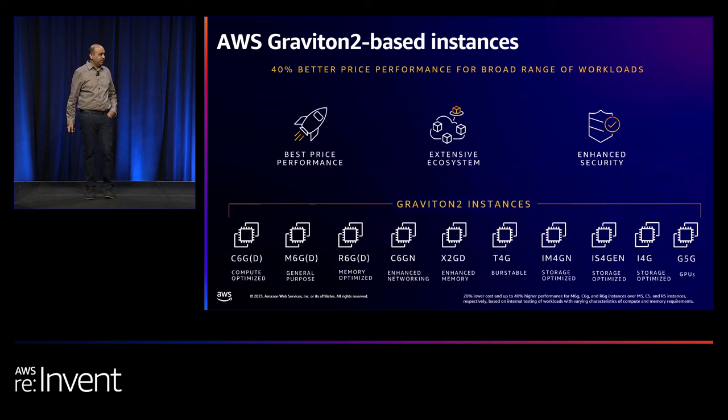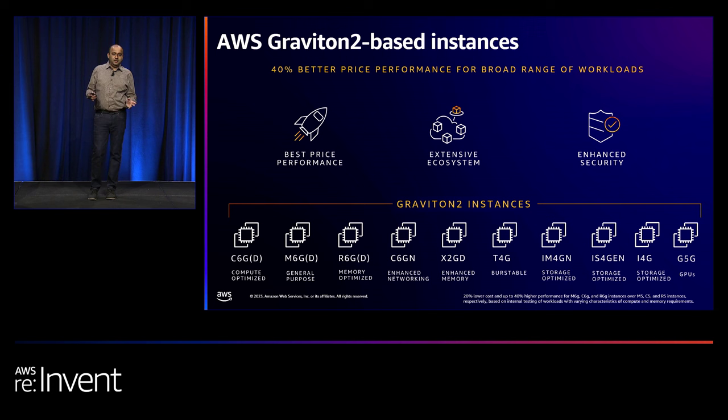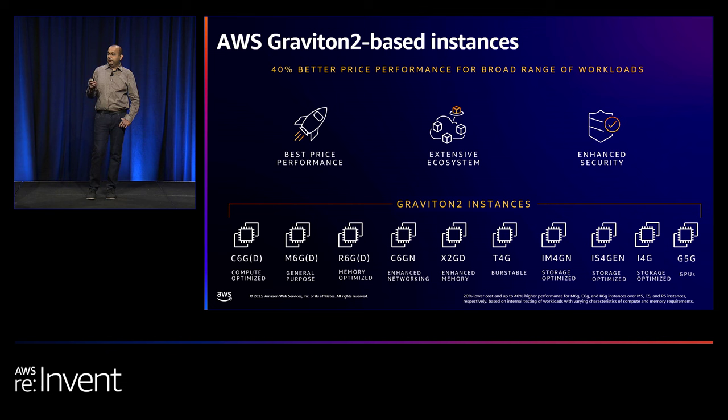Graviton 2 delivered up to 40% better price performance for a wide range of workloads, including web servers, video streaming, gaming, databases, and analytics. Today we have 13 instance types powered by Graviton 2, available for nearly every workload in the cloud — compute, memory, storage, network-optimized — and we also have options with GPUs attached.